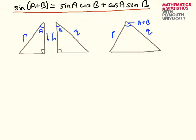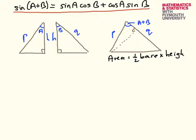To do it, we're going to drop a perpendicular here so that this is a right-angle triangle, and we're going to use the standard formula for the area of a triangle: area equals a half the base times the height. In this triangle, I'm going to view this as the base and this as the height.